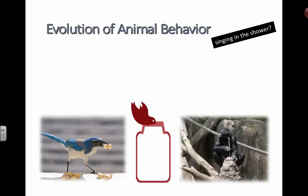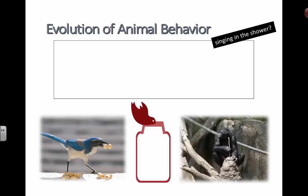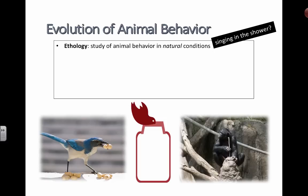So what exactly is ethology? We're looking at animal behavior and the evolution of animal behavior. Ethology is the study of animal behavior in natural conditions — for example, studying why humans sing in the shower.